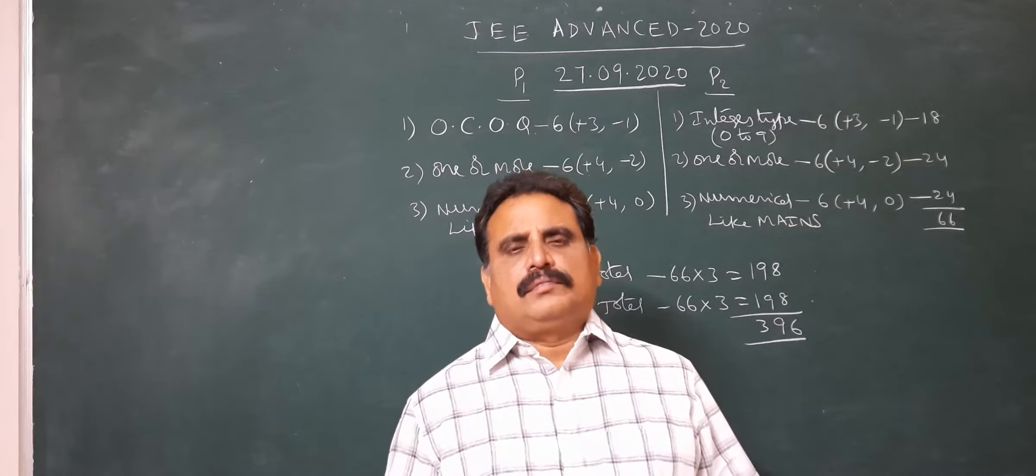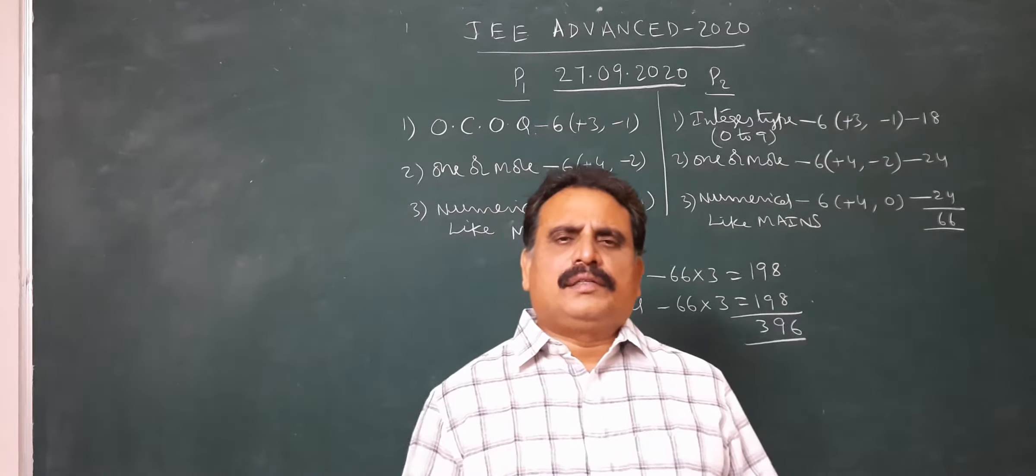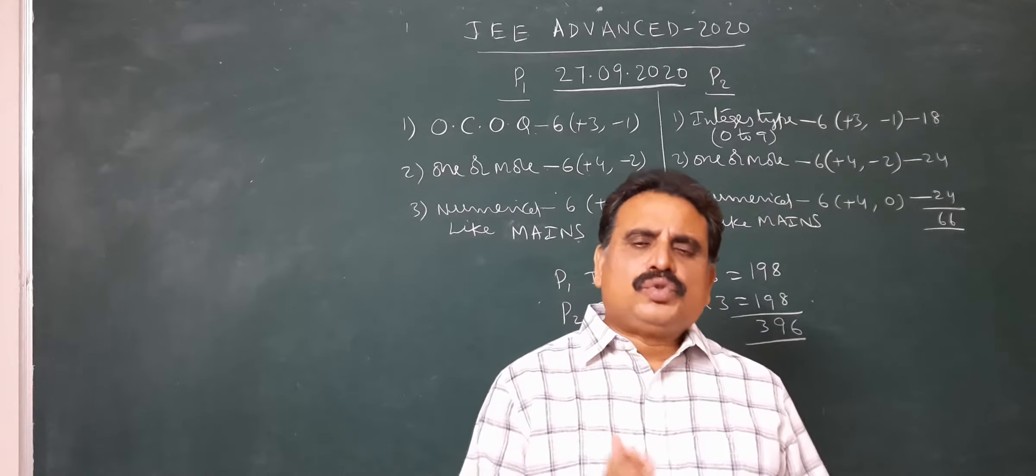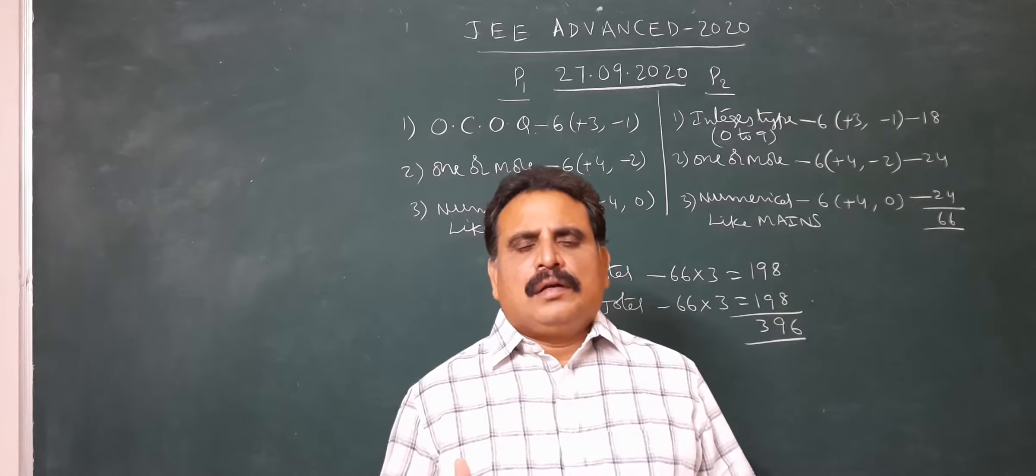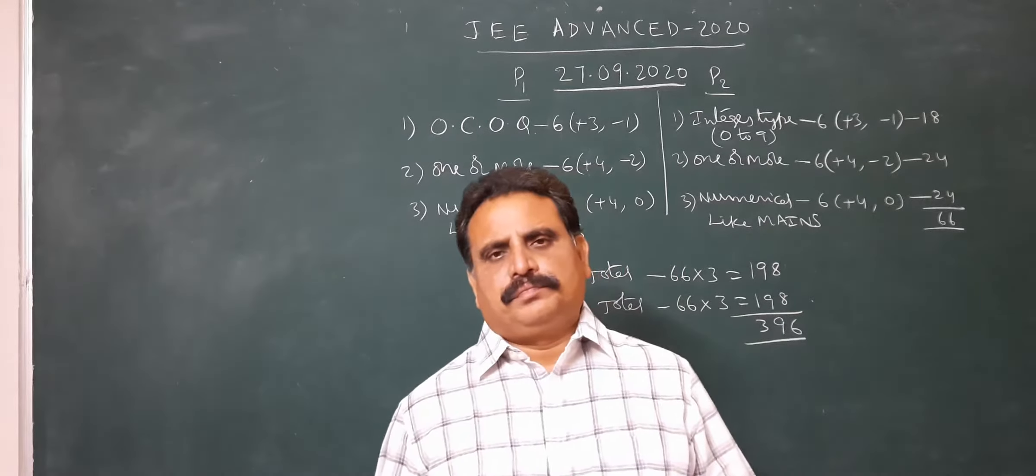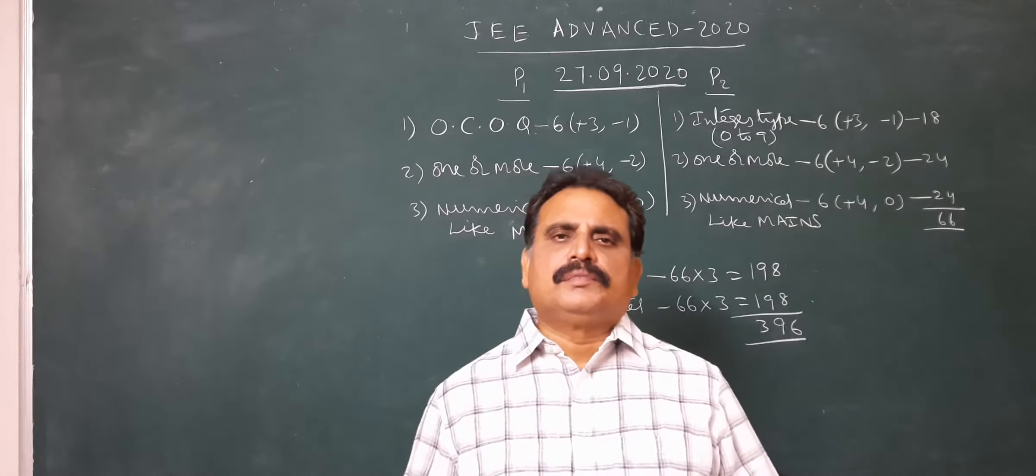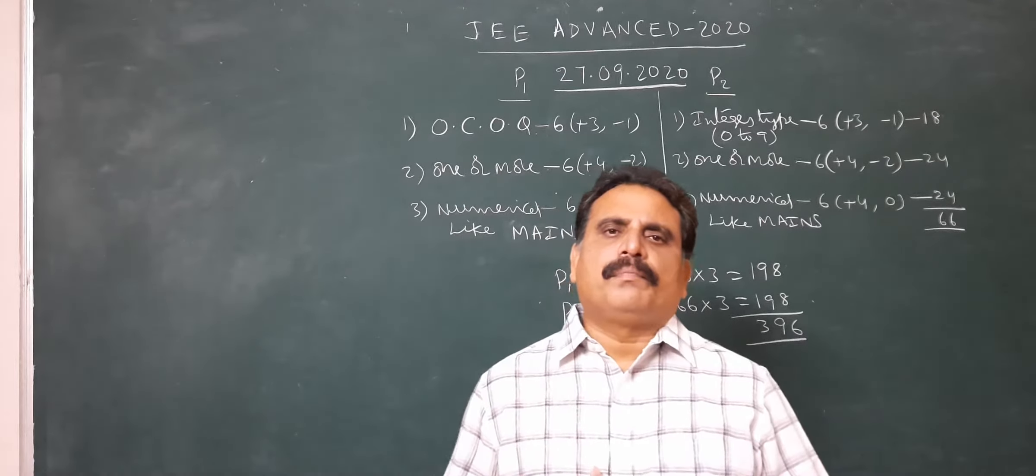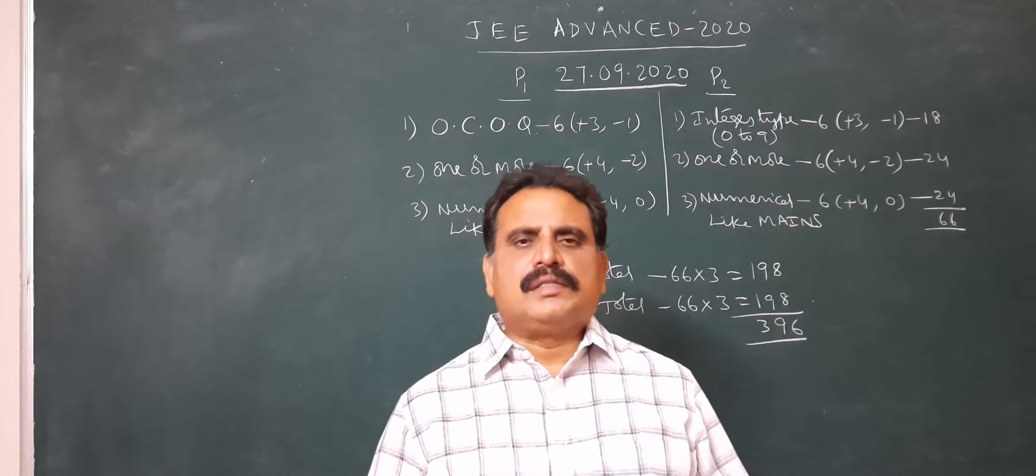Paper 1 mathematics is moderate. Paper 2 is moderate to difficult. Paper 2 is lengthy comparatively to paper 1. Some questions in paper 1 are also difficult. Now we discuss the pattern of JEE Advanced paper.